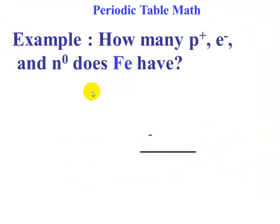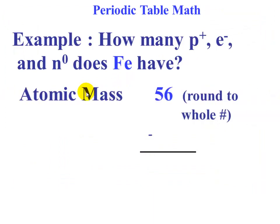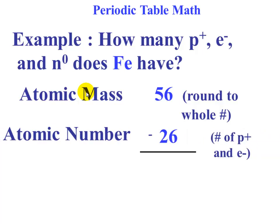When looking at the periodic table math, the atomic mass was 56 amu. The atomic number was 26—that is the number of protons and electrons. The difference is 30, and that gives us the number of neutrons.